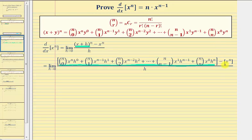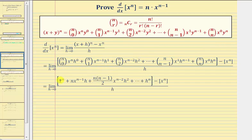Notice on the far right we still have minus x to the nth. The next step is to evaluate these combinations to determine the first several coefficients. We see that n choose zero is equal to one, n choose one is equal to n, and n choose two is equal to n times the quantity n minus one divided by two, and so on.